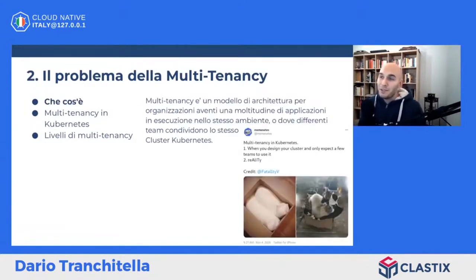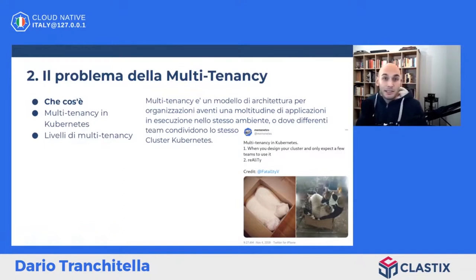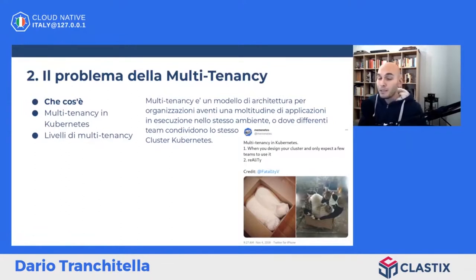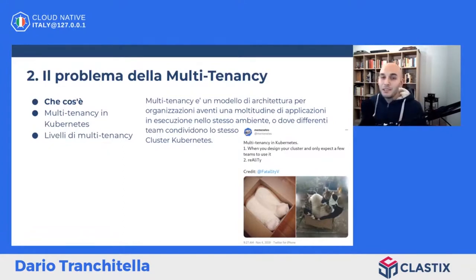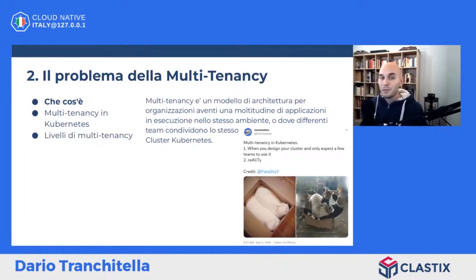Iniziamo subito con la definizione. La multitenancy è un modello di architettura per organizzazioni aventi una moltitudine di applicazioni in esecuzione nello stesso ambiente, o dove differenti team condividono lo stesso cluster Kubernetes. In Kubernetes abbiamo i namespace che tecnicamente possono essere utilizzati per implementare un layer di multitenancy. Siamo convinti di riuscire a ottenere un alto livello di multitenancy semplicemente utilizzando gli strumenti di Kubernetes, ma non è propriamente così.